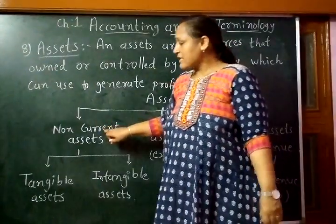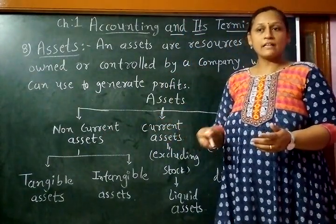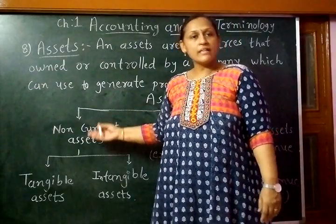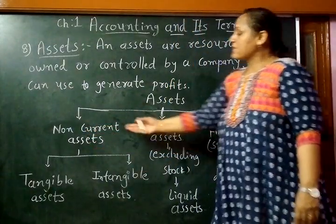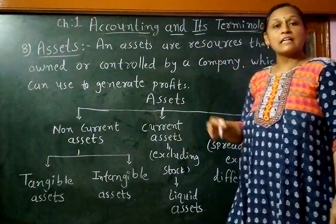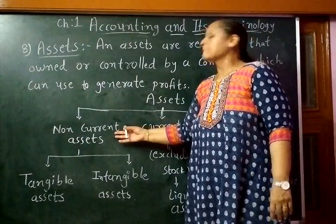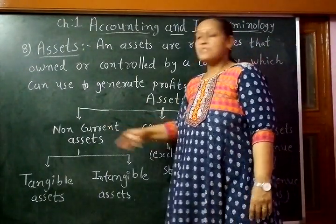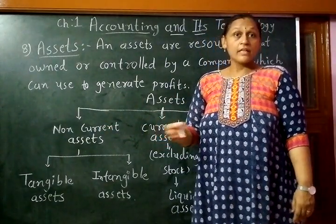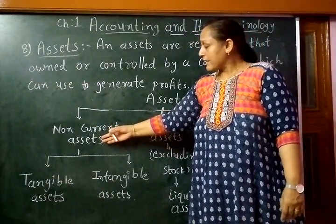Non-current assets — similar to how liabilities are divided into categories according to time — are those assets that are going to stay in the business for a longer period of time. Examples of non-current assets are building, furniture, machinery, copyright, patent, goodwill, etc.